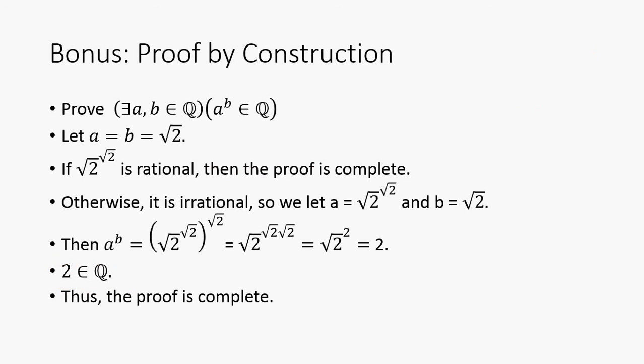Here's a bonus proof by construction. We want to prove that there are numbers that are not rational such that A to the B is rational. Let A equal B equals square root of two. Square root of two clearly is irrational. If square root of two to the square root of two is rational then the proof is complete. Otherwise it is irrational, so we just let A equal the result from before and B equals square root of two. Then we just apply the definition again.